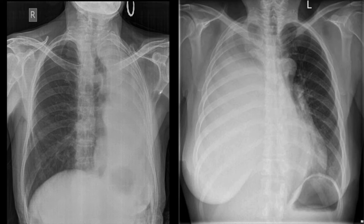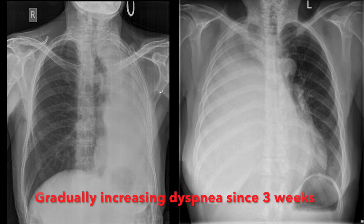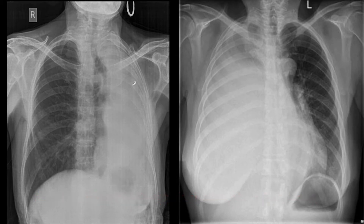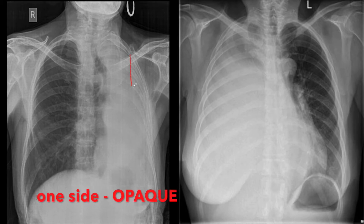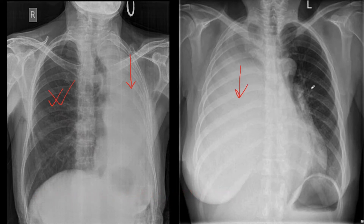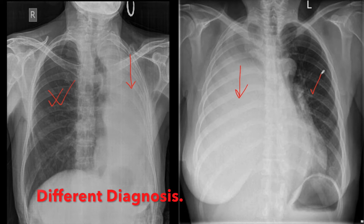Look at these two X-rays. Both of these patients presented to the emergency room with gradually increasing dyspnea since 3 weeks. In both these patients, you can see that one side of the thorax is opaque and another side of the thorax is well aerated. Both these patients have different diagnoses which can be made by looking at the X-ray. Can you come to the diagnosis?